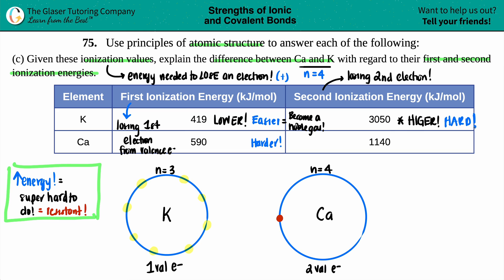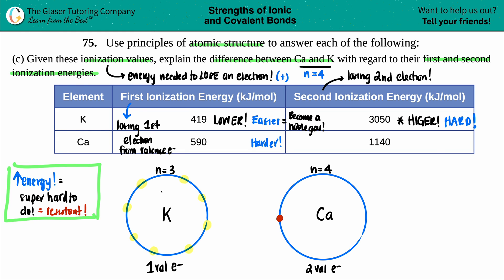Since potassium already has noble gas configuration, it is absolutely not losing another electron - you need 3050 kilojoules to remove one extra electron, which is super hard to do. But calcium is different: if calcium loses this second electron it becomes a noble gas, so goodbye - that electron goes. That's why calcium's second ionization energy value is lower - it's finally when calcium reaches its noble gas configuration.